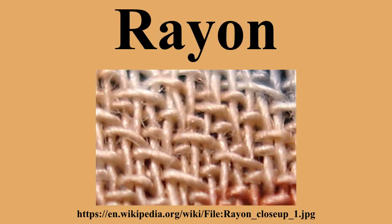Rising cotton prices in 2010 led clothing makers to begin replacing cotton with rayon in fabrics. As demand for rayon increases, companies such as Fortress Paper have been investing in pulp mills to increase production. Rayon now sells for as much as $2.70 per pound, which has led to an increase in the retail price of clothing made with rayon, yet rayon still has a price advantage over cotton.